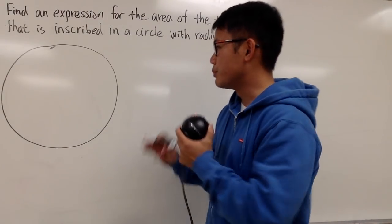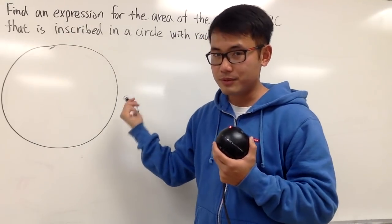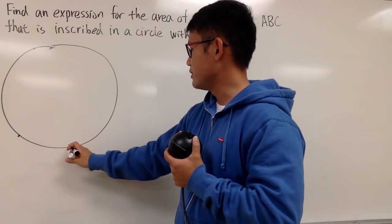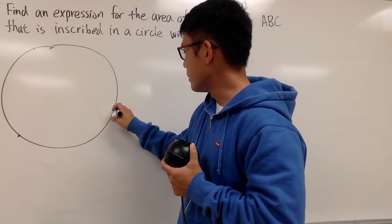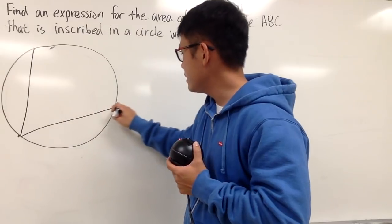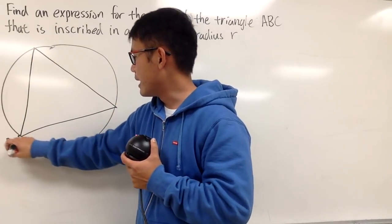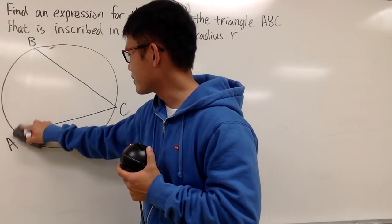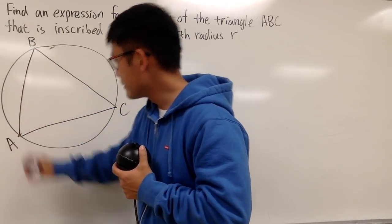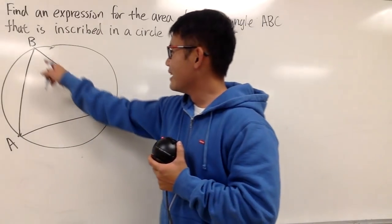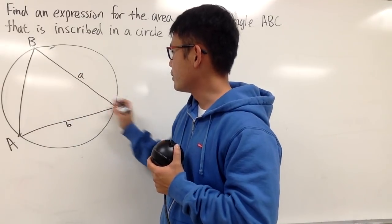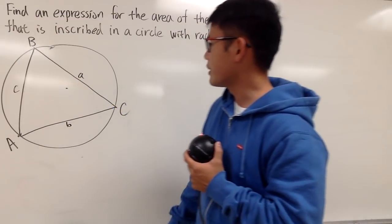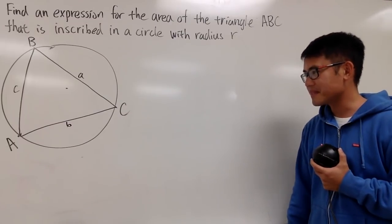Here we have a circle, and we'll put a triangle inside — that's what we mean by an inscribed triangle. I'll say here are my three vertices: this is A, this is B, and this is C. The side opposite B is little b, opposite A is little a, and opposite C is little c. And here is the center of the circle.